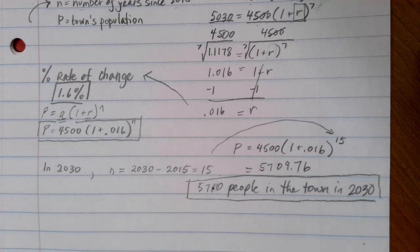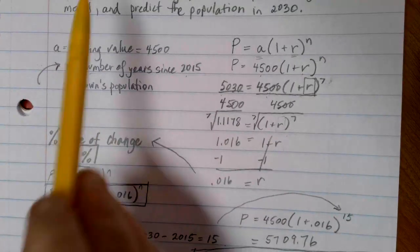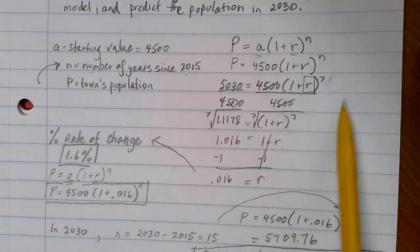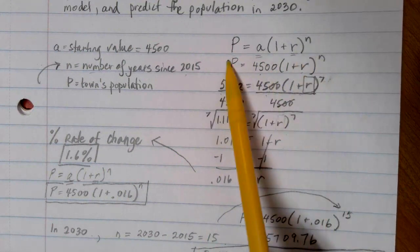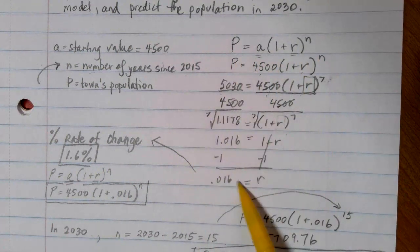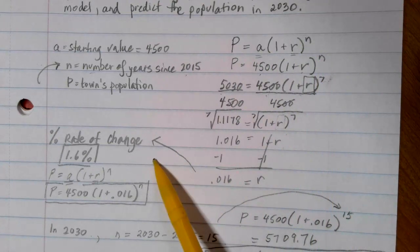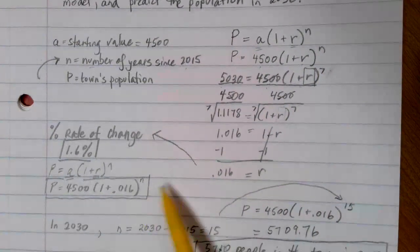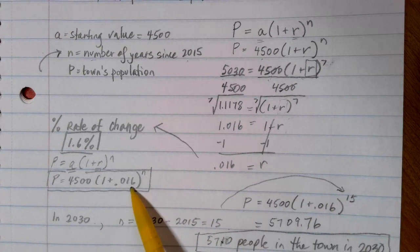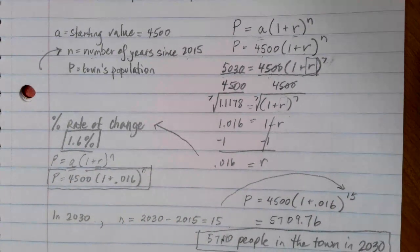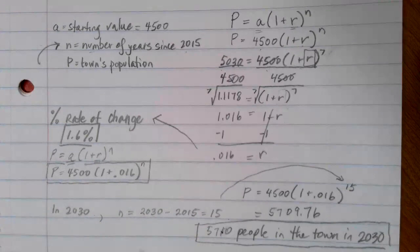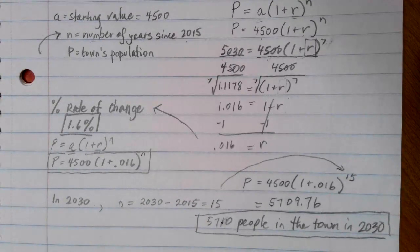So that's the basic process for how we do this. If we're asking for the rate of change, we have to use this process here, putting in the second point that we know and solving. That rate can be written in percentage form if you want to talk about the rate of change, or we can just use that number as the R in the equation model. And then once you have that, you can figure out any value that you want from there.